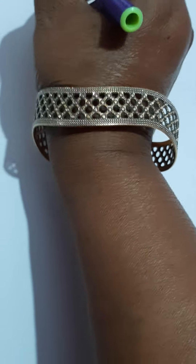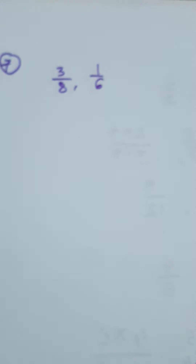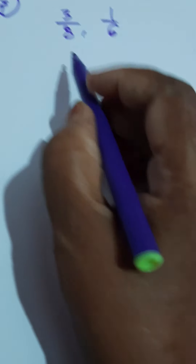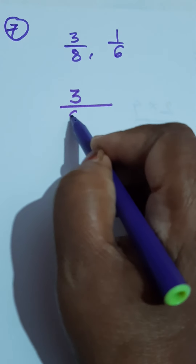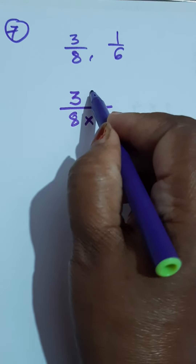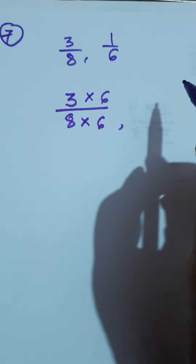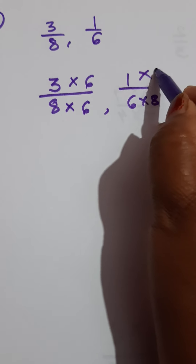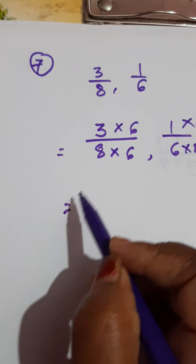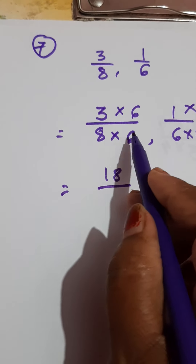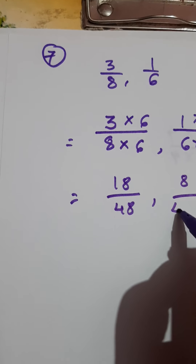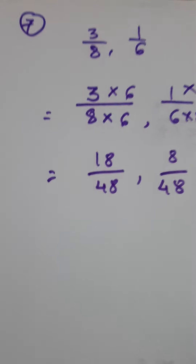Look at the seventh example: 3 upon 8 and 1 upon 6. How to make them like? Multiply the first fraction 3 upon 8 by the second denominator, and multiply the second fraction by the first denominator, that is 8. So: 3 sixes are 18, 8 sixes are 48. And 8 ones are 8, 6 eights are 48. Now they are like fractions.